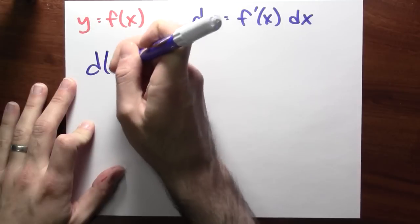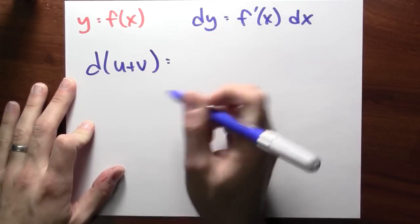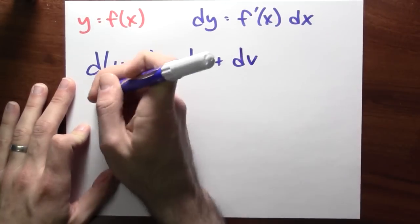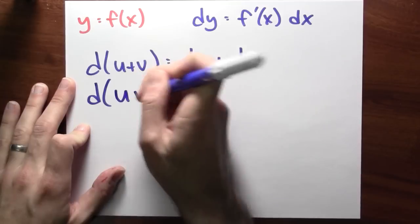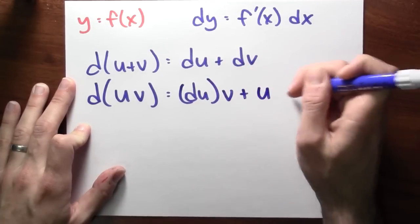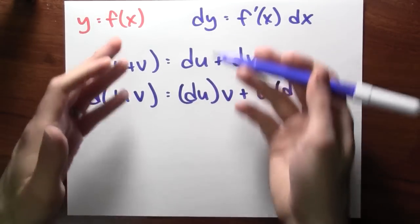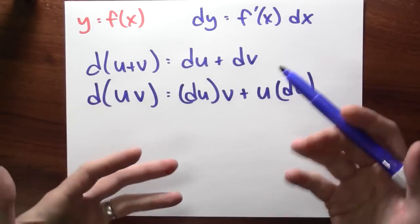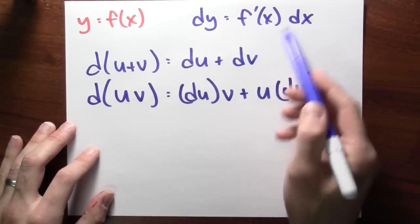So for example, d of u plus v is du plus dv. d of u times v, the product rule, is du times v plus u dv, right? There's a quotient rule. I mean, these differentials satisfy all the same, or I should say, analogous rules to derivatives.